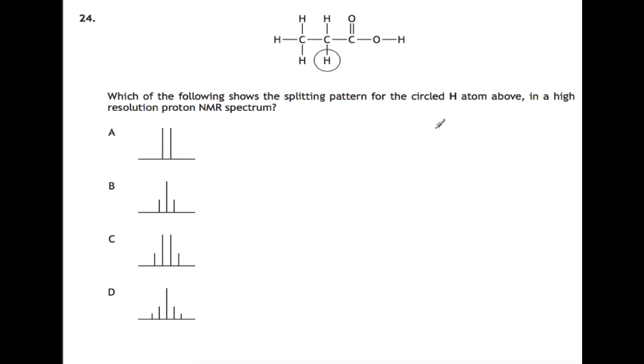Question 24. Which of the following shows the splitting pattern for the circled H atom in a high-resolution NMR spectrum? So the rule that we use is the N plus 1 rule. So that is you've got your hydrogen, both of these are identical, and you look at the carbon hydrogen beside it and how many hydrogens are attached. So we have three hydrogens and we do 3 plus 1. So it's going to be four lines. So the answer is going to be C.